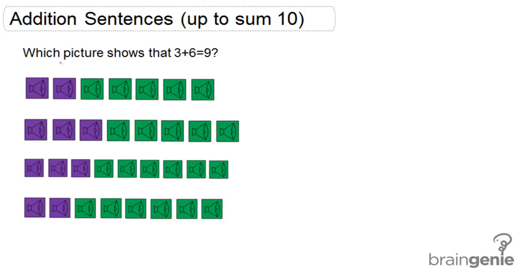The first picture has two purple speakers plus 1, 2, 3, 4, 5 green speakers. So in total, we're going to get 7. So this is wrong.